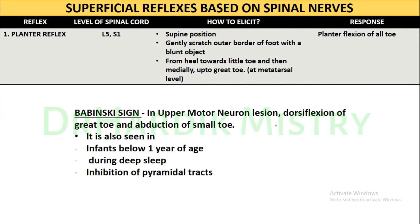In the plantar reflex, the normal response is plantar flexion of all toes. But if there is dorsiflexion of the great toe as well as abduction of the small toes, this is the abnormal plantar reflex known as Babinski sign, and it is seen in upper motor neuron lesions.